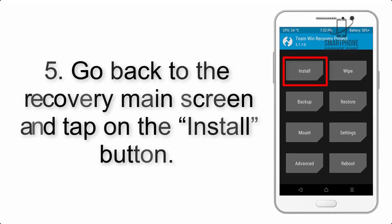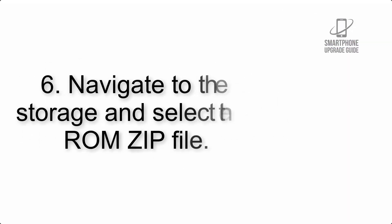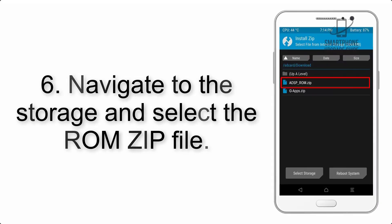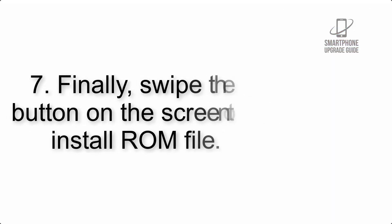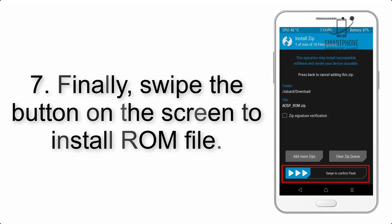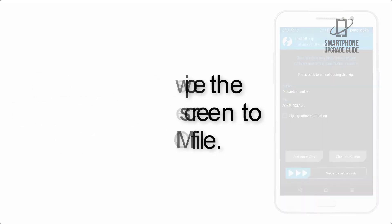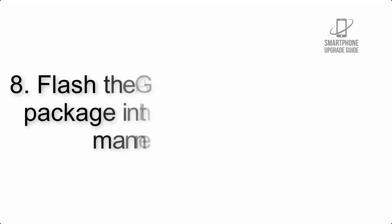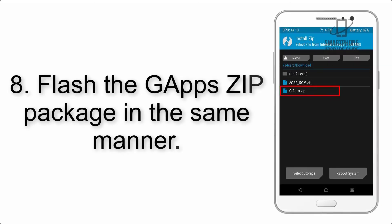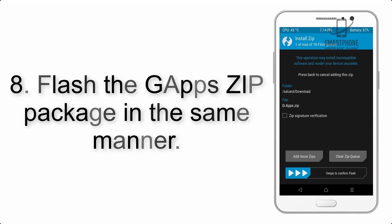Step 5: Go back to the recovery main screen and tap on the Install button. Step 6: Navigate to the storage and select the ROM zip file. Step 7: Swipe the button on the screen to install the ROM file.